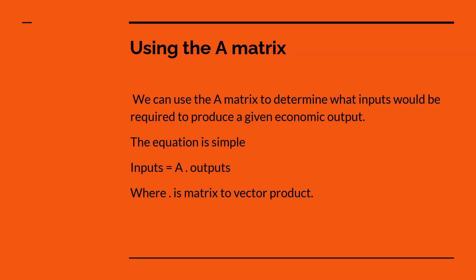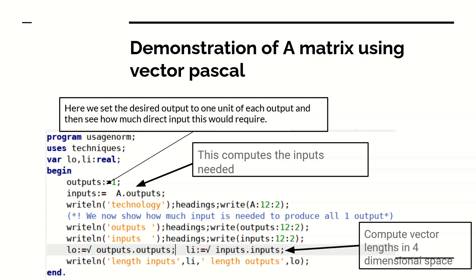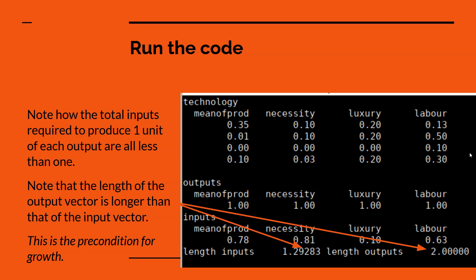Now, the simplest thing you can do is to work out what inputs would be required if you wanted a given level of output. So if you have an economic plan, which you can specify as an output vector, it will tell you what the inputs that are going to be required to produce that output are. And that is basically done by a simple matrix to vector product. You multiply the output vector, pre-multiply it with the matrix A. Here's a simple example in vector Pascal of taking that matrix and pre-multiplying the desired output vector. I'm saying one unit of everything with that to get the inputs that you would require. So when you run it, it prints out the A matrix.